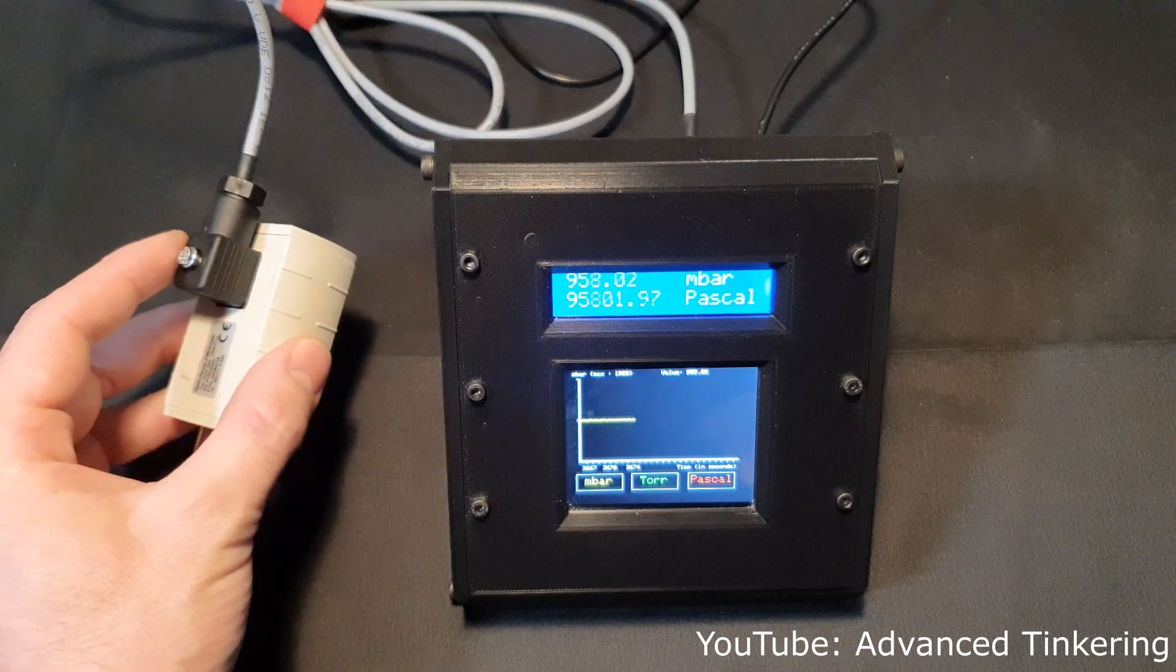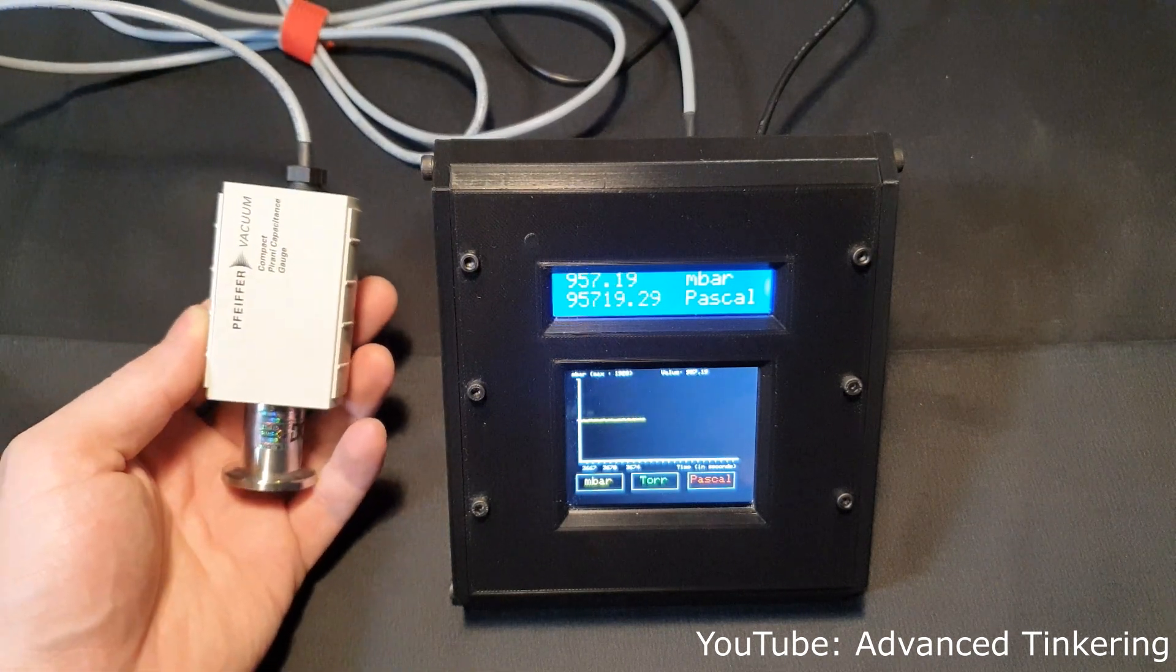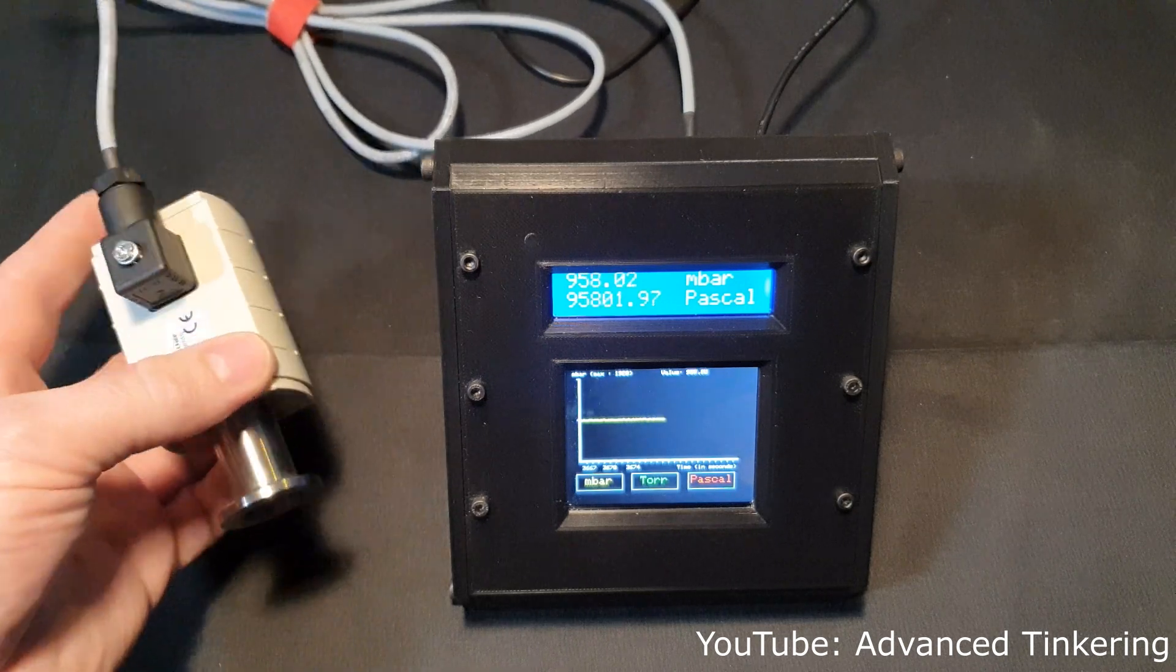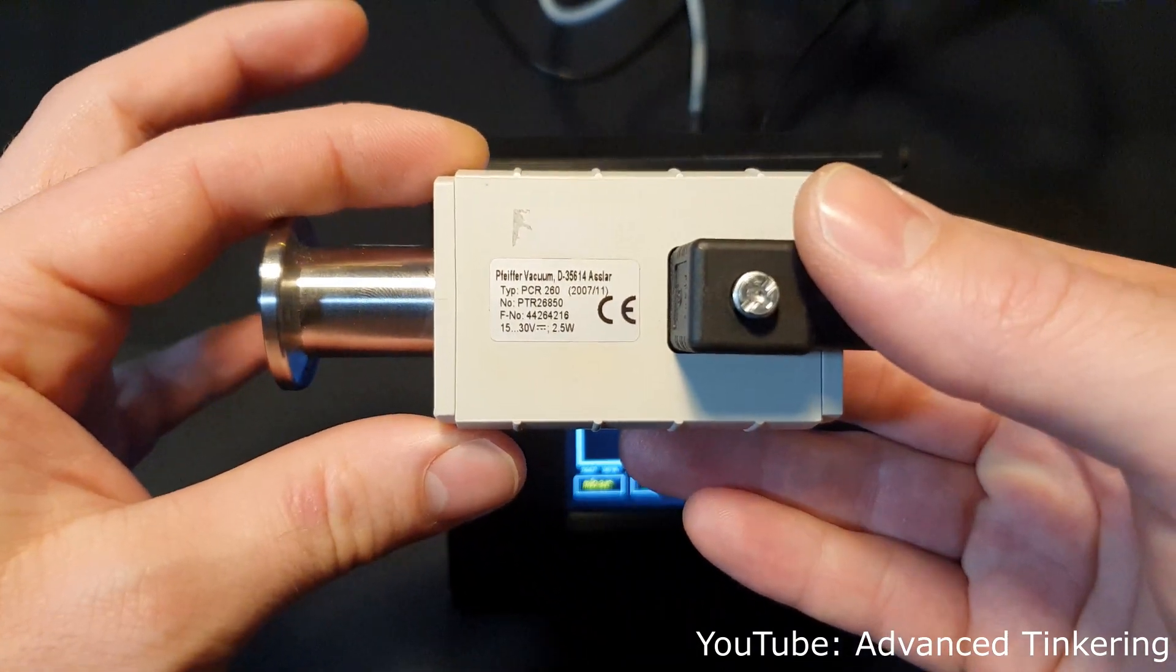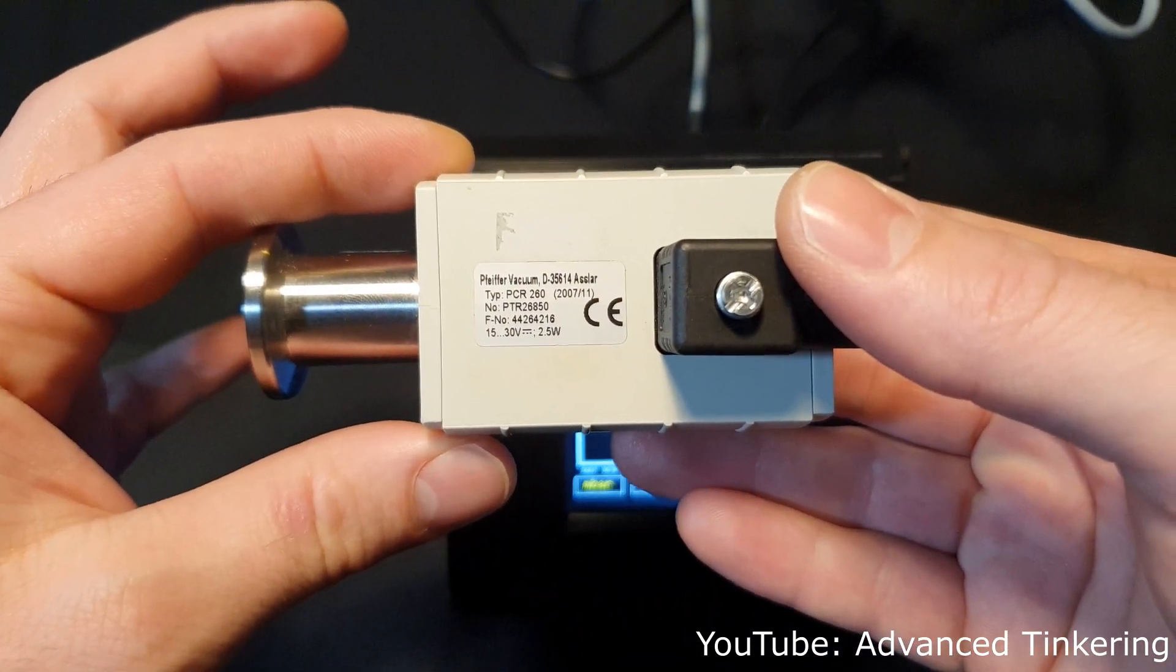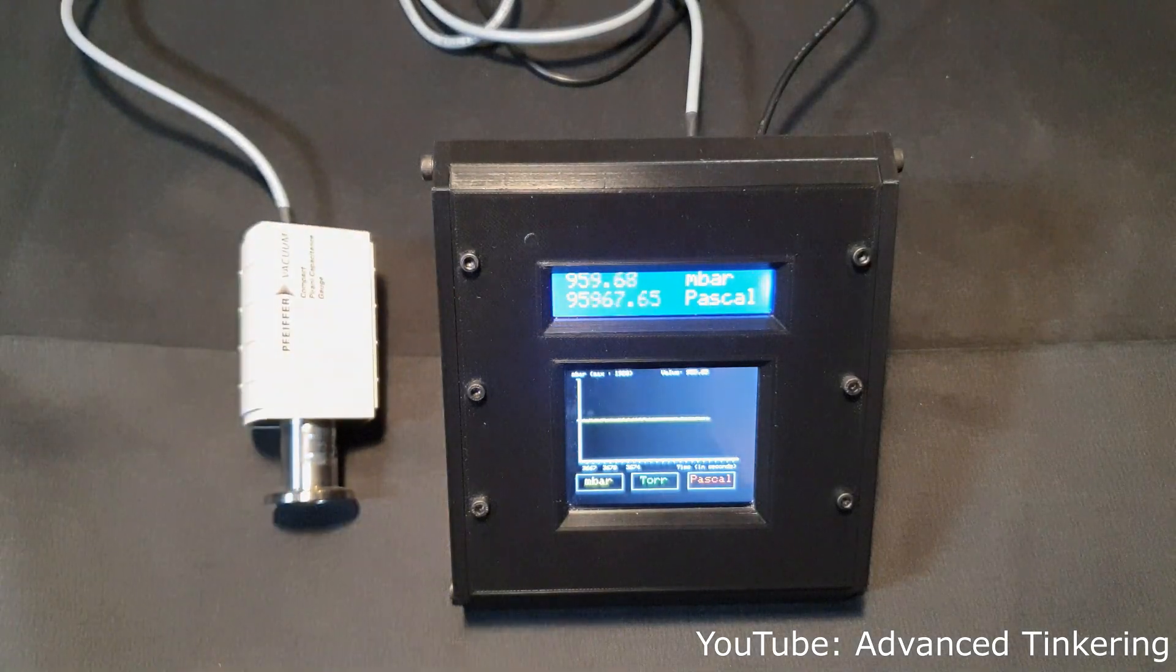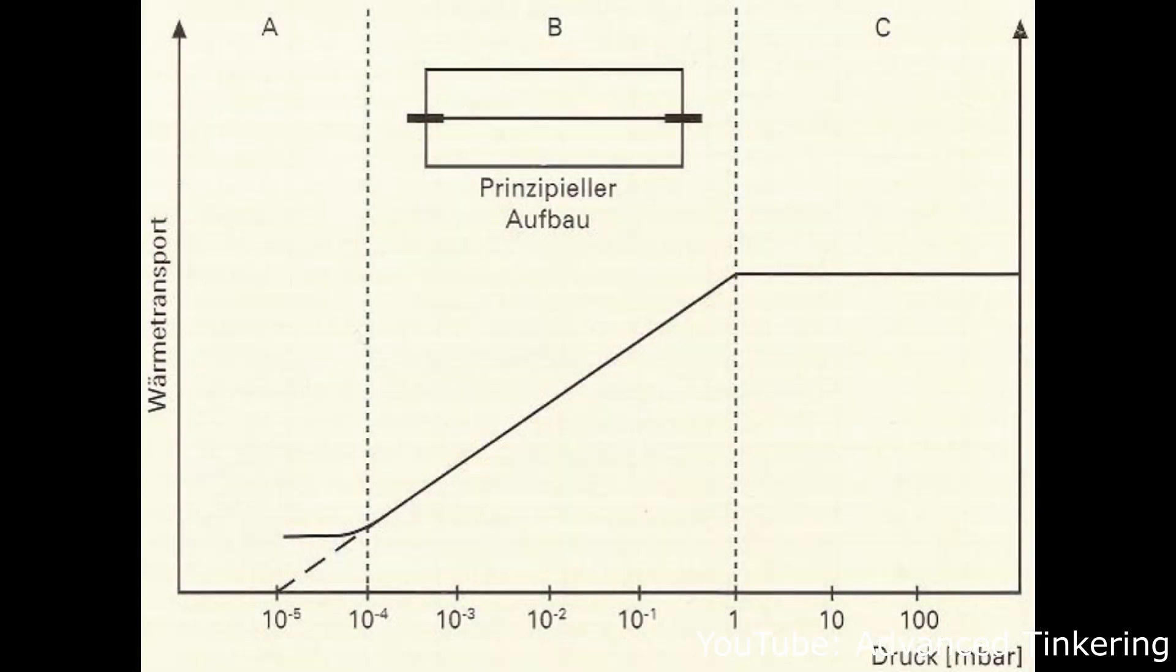The gauge you can see on the left side here is a Pfeiffer PCR 260. PCR means that it is a Pirani capacitance gauge, so it combines two measuring methods. On the one hand it uses the Pirani method, and on the other hand it uses the capacitance method. The advantage of this combination is that you can measure pressure in a broader range.